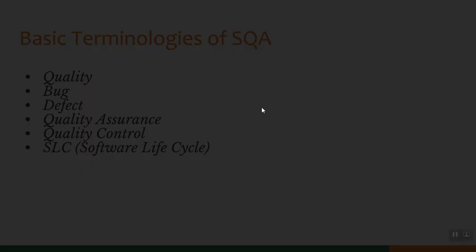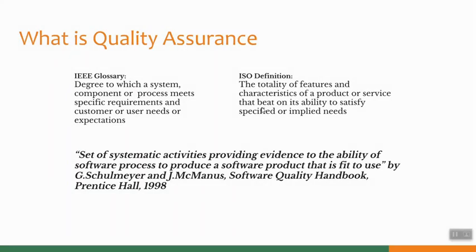Now let's focus on SQA. SQA is the degree to which a system, component or process meets specific requirements and customer or user needs or expectations. According to the ISO definition, it is the totality of features and characteristics of a product or service that bear on its ability to satisfy specified or implied needs. In simple words, SQA is a set of systematic activities providing evidence of the ability of software processes to produce a software product that is fit to use.